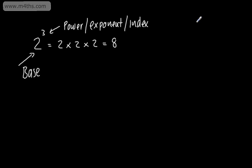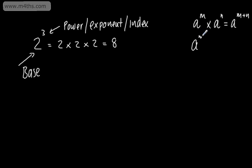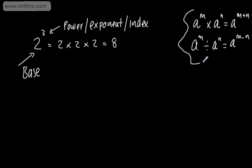Let's start with multiplication. If I take a to the power of m and multiply it by a to the power of n, we have a to the power of m plus n. So if the bases are the same and we're multiplying, we add the powers. If we're dividing and we take a to the power of m divided by a to the power of n, we subtract the powers and write this as a to the power of m minus n.